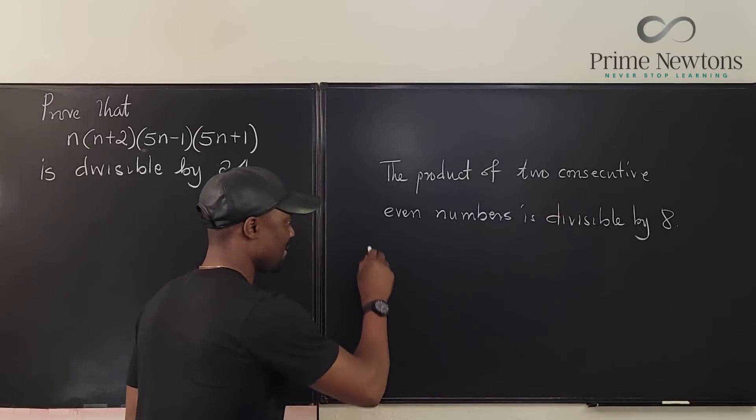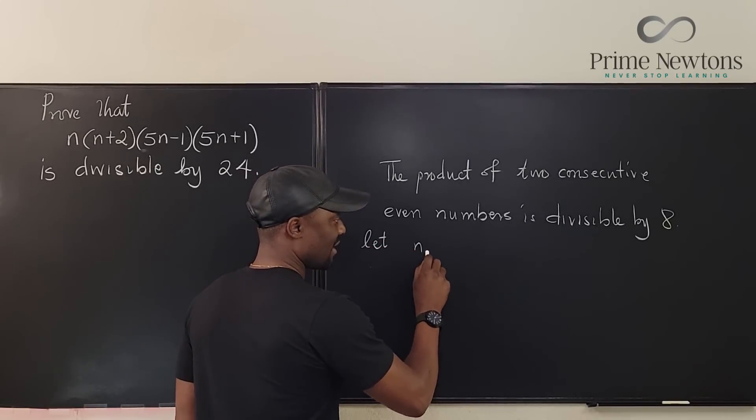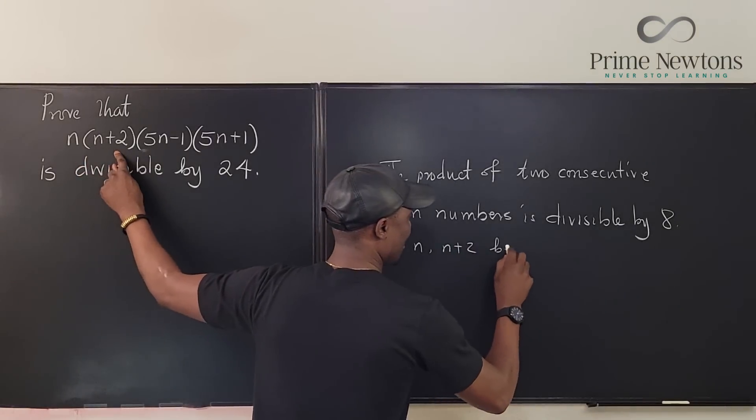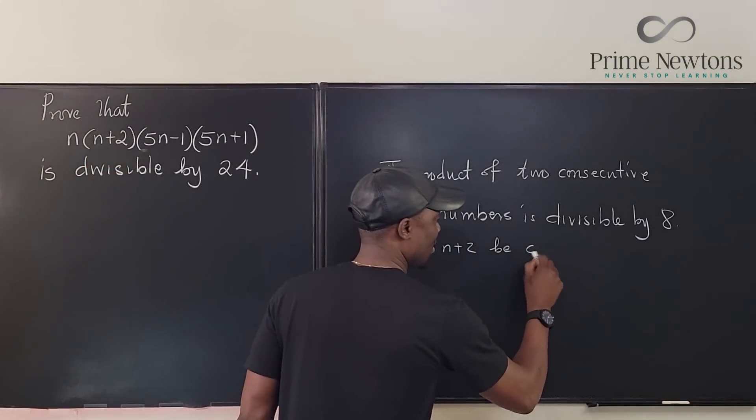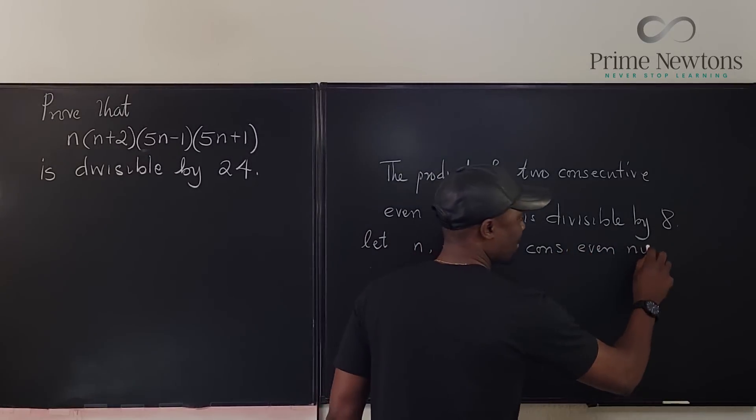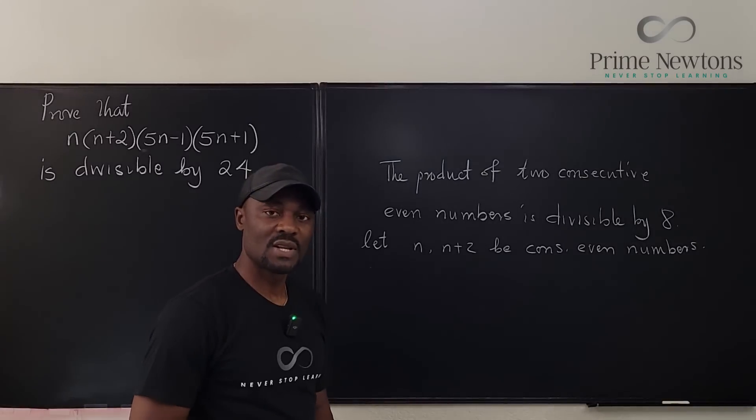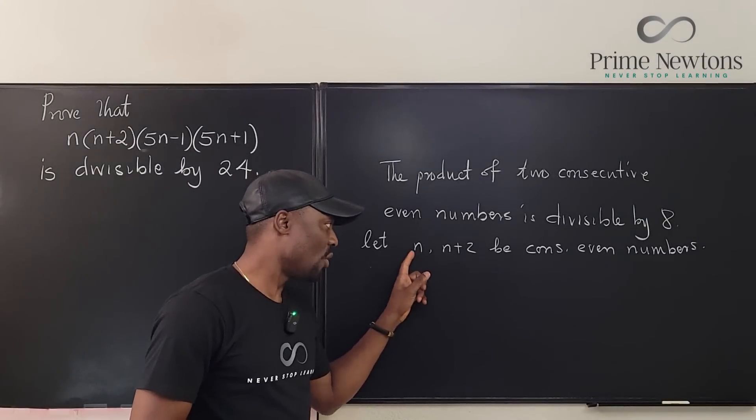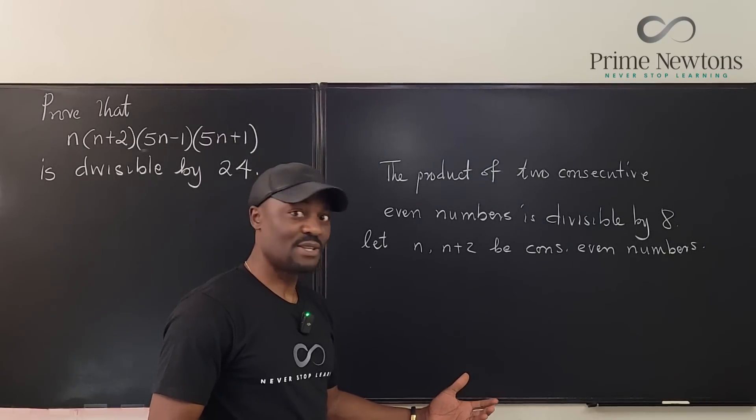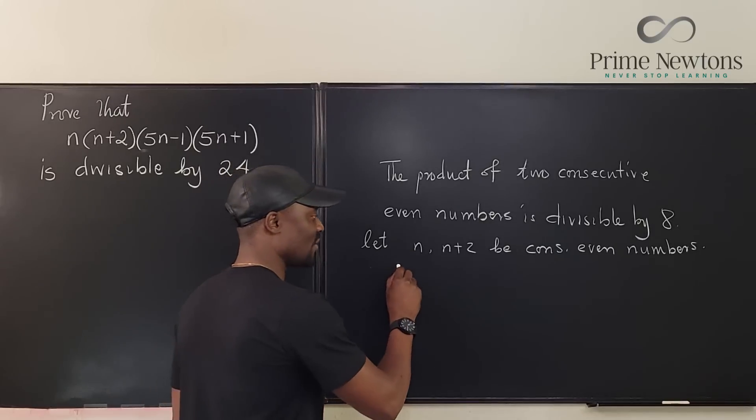Let's just take it this way. Let's say let n and n plus 2, just as we have in this picture, be consecutive even numbers. We just need to know that if you multiply these two numbers they're going to be divisible by 8. How do we know? Well because this is even we can write it as 2k.